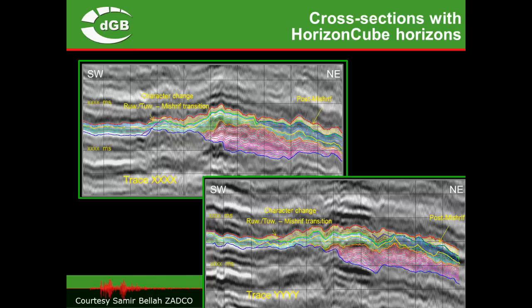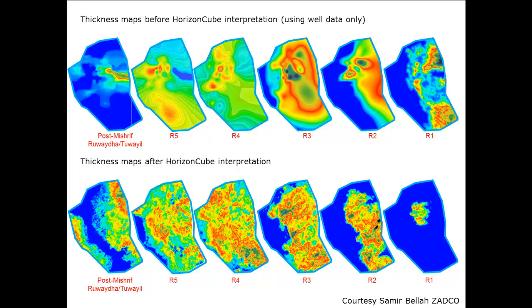Here we look at two cross sections through the reef complex. The colorful lines are the auto-tracked horizons from the HorizonCube. The sequence of maps above shows the field model before the seismic study — based on well data only, very coarse, with all the bull's-eyes caused by the gridding algorithm. The lower sequence shows the new set of maps based on seismic information from the HorizonCube, and you can see there is much more detail in it.